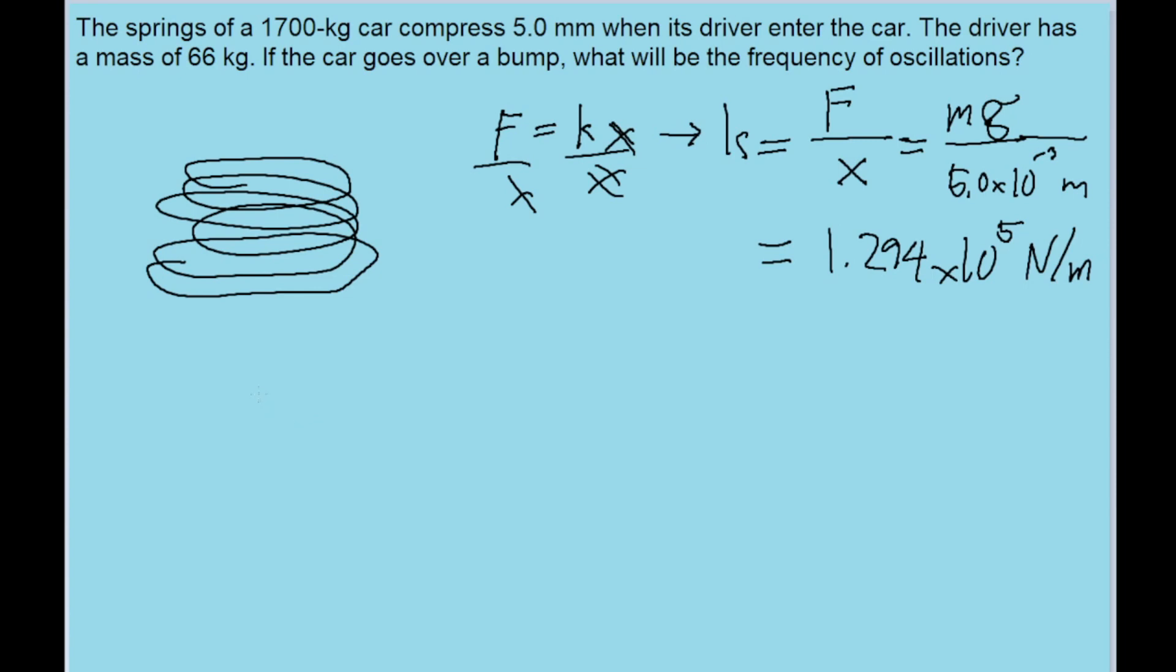But now that we know this, we can use the formula for the frequency of a spring's oscillation, which is equal to 1 over 2π times the square root of k, the spring constant, which we now have.